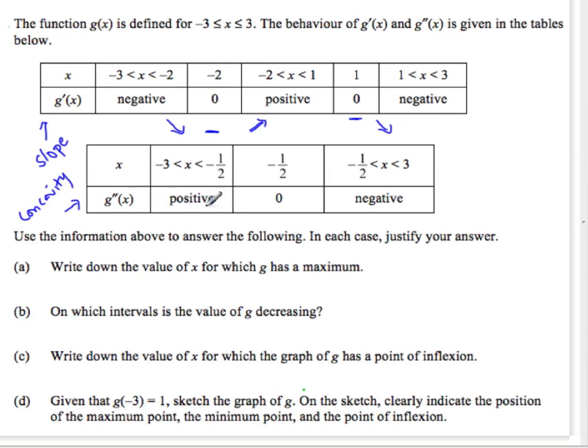g of x, g prime of x, has a positive inflection, which means it's an up-bowl shape. It has 0, which means there's probably a point of inflection, which there is. It changes from positive concavity to negative concavity, which means it's a point of inflection. So, it changes concavity right there at negative 1 half.